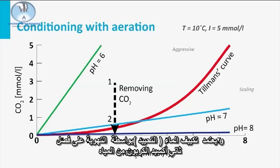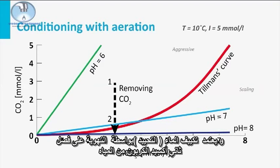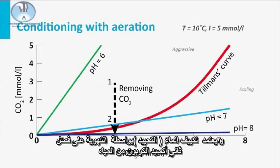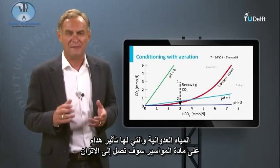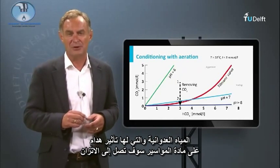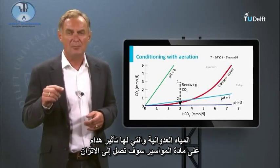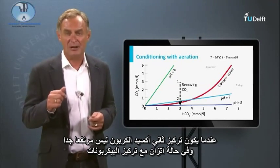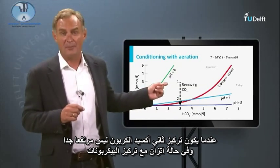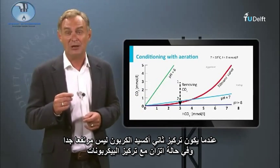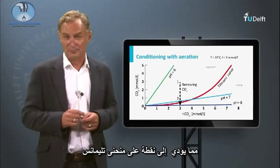Conditioning with aeration is based on stripping carbon dioxide out of the water. To see the effect of stripping on water composition, the so-called Tillman's Curve is used. Aggressive water that has a corrosive effect on pipe material will reach equilibrium when the concentration of carbon dioxide is in equilibrium with the bicarbonate concentration, resulting in a point on Tillman's Curve.